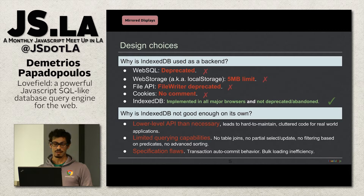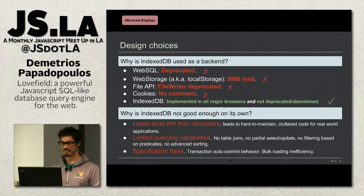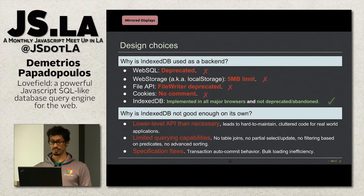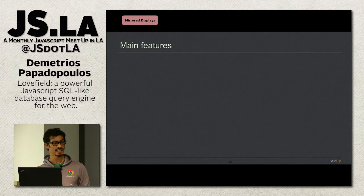We also learned about some specification flaws. The transaction autocommit behavior: when the JavaScript message loop turns and you haven't placed any request against a transaction, it will silently commit in the background — next time you try to use it, you get an error. The other flaw is bulk loading: loading a lot of data into memory is very slow because of the eventing scheme — every row calls back into your JavaScript page even if you have nothing interesting to do. Love Field mitigates all these issues.